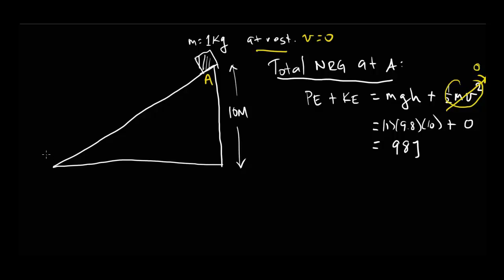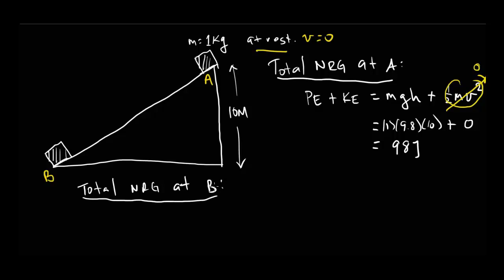We let go of the block and it slides down to the very bottom — call that point B. The total energy at B is again potential plus kinetic: mgh plus one-half mv squared. At the very bottom of the ramp, h is 0, so the potential energy term goes to zero, and all of the energy is now kinetic. By conservation of energy, if the energy was 98 joules at A, it has to be 98 joules at B as well.